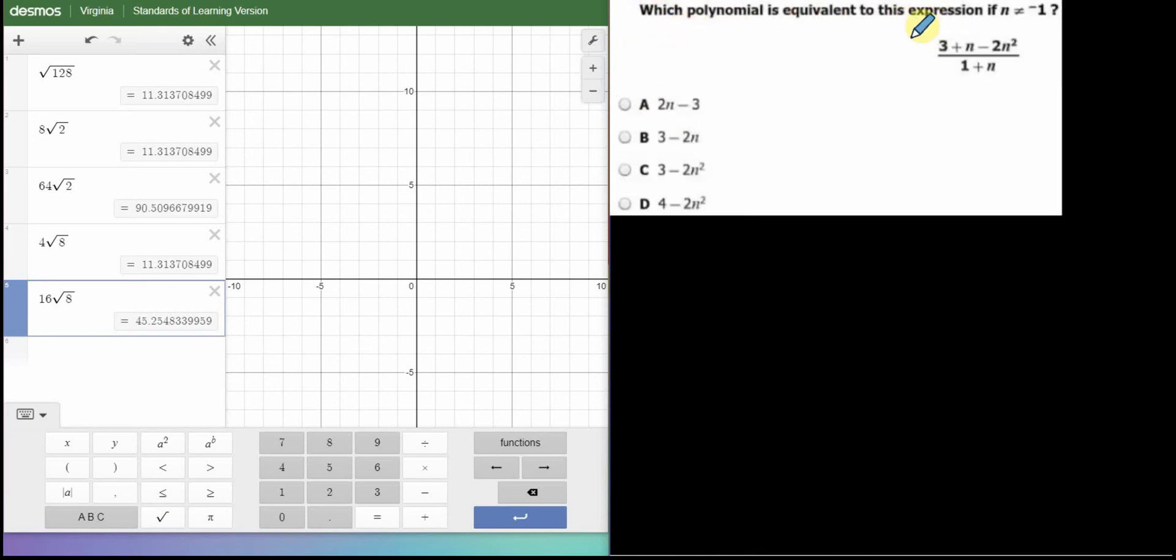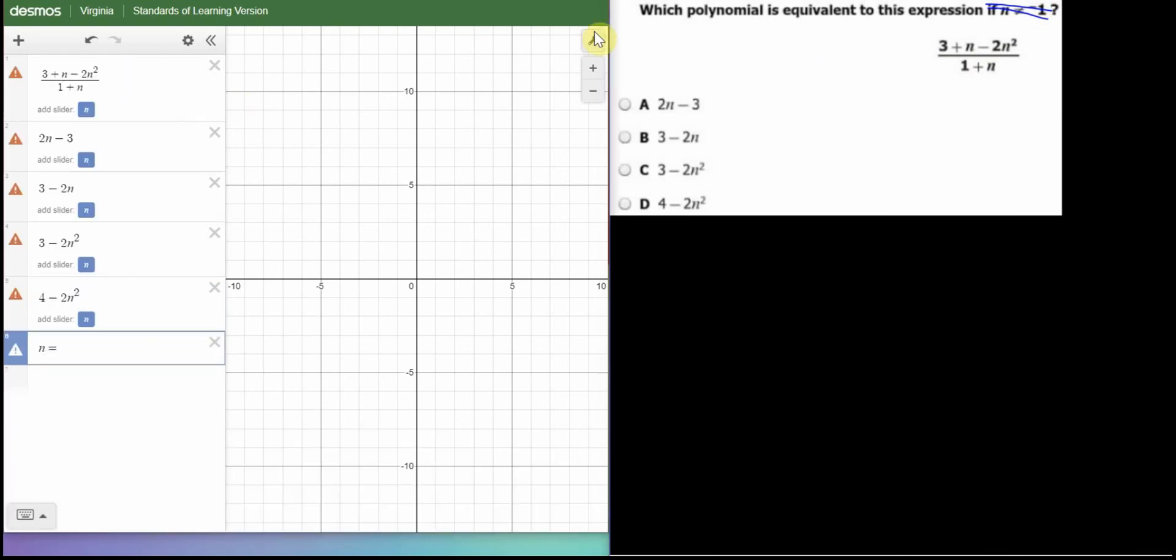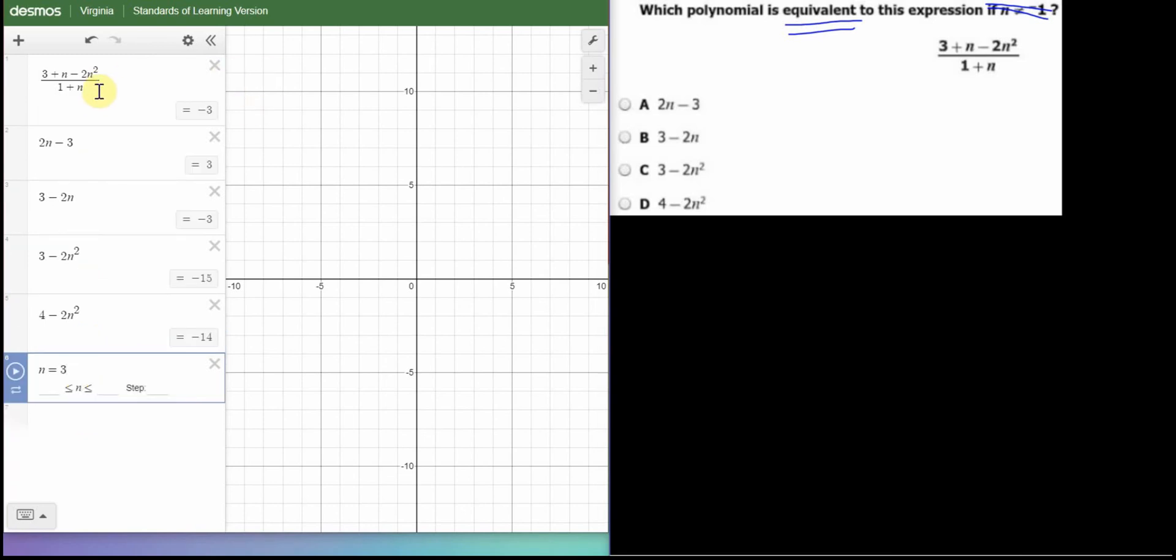Which polynomial is equivalent to this expression? If n is not equal to negative one, that's not important to the question. It's just telling you can't put negative one in for n. So, you know negative one is not one of your answers. And, you don't want to put negative one in for n. So, over here, I've put in the original expression. And, I've typed all four possibilities. And, we want the one that's equivalent to this. So, I'm going to come down here. I'm going to plug something in for n. And, only one of these four is going to be equal to this one. Okay. Again, I stick with three, four, five. So, I'll put in three. So, when n is three, this one is negative three. And, the only other one that gives me negative three is my second choice. Three minus two n. So, that is my answer.